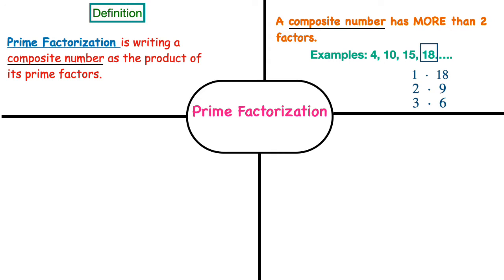Going back to the definition: prime factorization is writing a composite number — which is a number that has more than two factors — as the product of its prime factors. We get products by multiplying, so basically we're going to be multiplying the prime factors of a composite number, and that will give us the prime factorization.